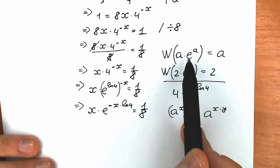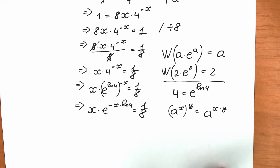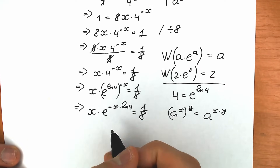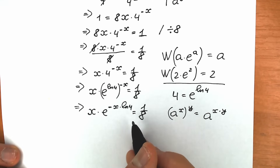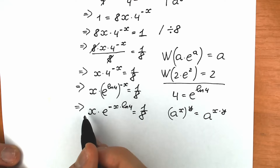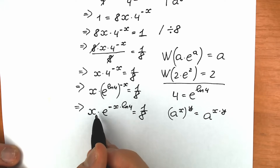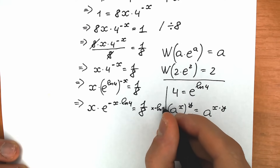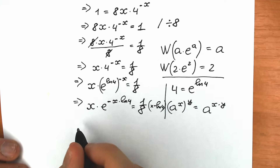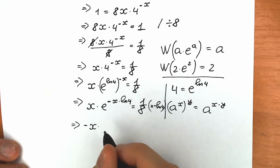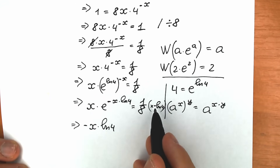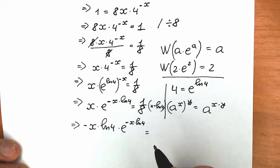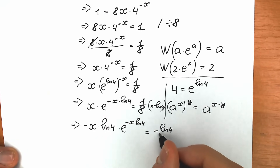Now let's multiply both sides by minus natural log 4. We do this because on the left side we have minus x natural log 4, and multiplying by minus natural log 4 will give us that same expression in front of e and in the exponent of e. So we get minus x times natural log 4 times e to the power minus x times natural log 4, equal to minus natural log 4 over 8.